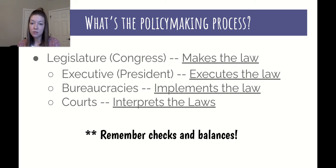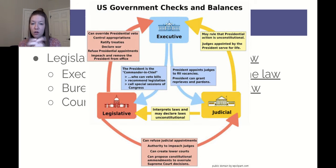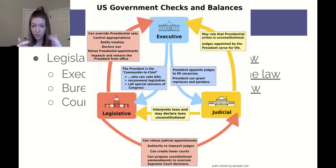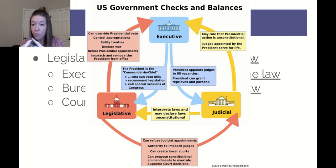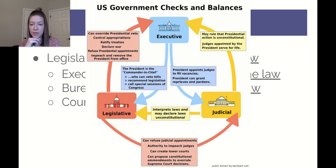Remember checks and balances — this is where checks and balances comes in. There are quite a few ways that each branch of government can check the other branches and make sure they don't become too powerful in this policymaking process, whether it's vetoing a law, declaring a law unconstitutional, overriding a presidential veto, or impeaching. Those are all ways our branches of government can check one another.